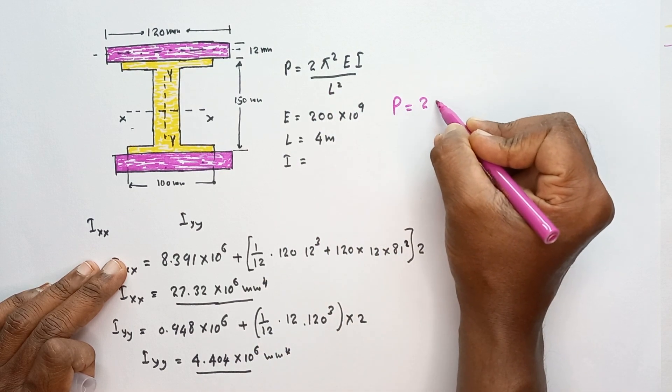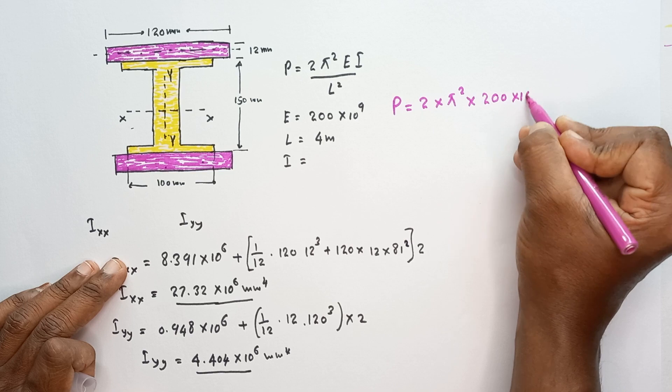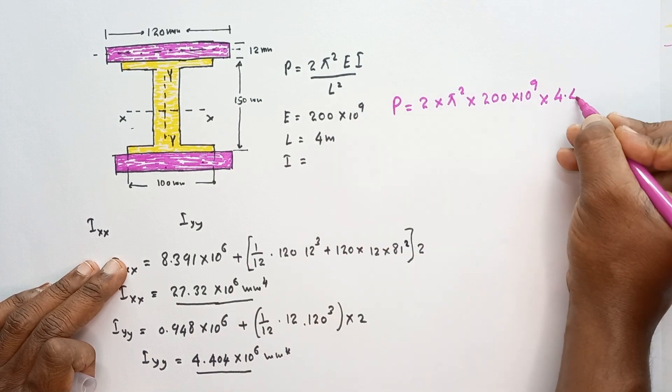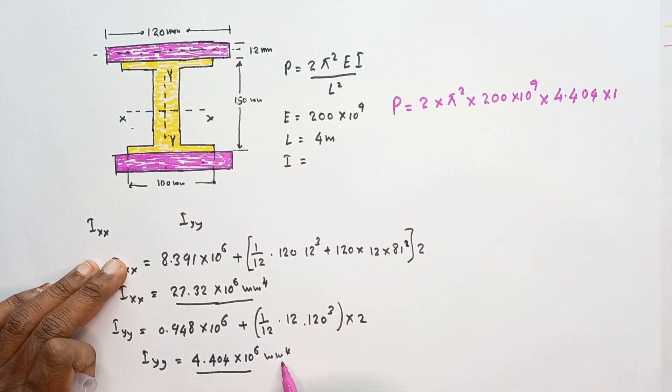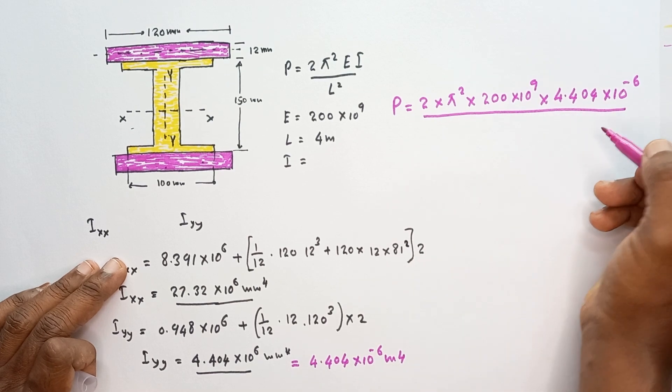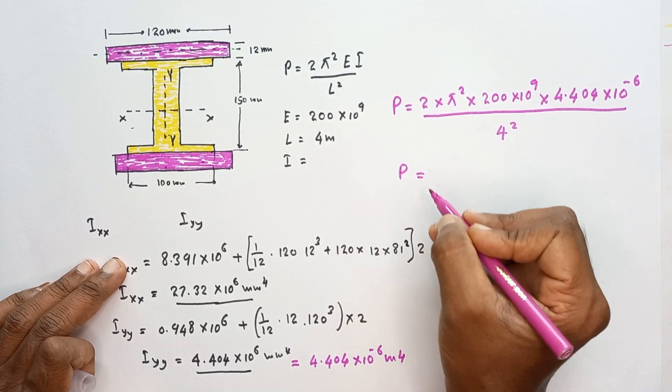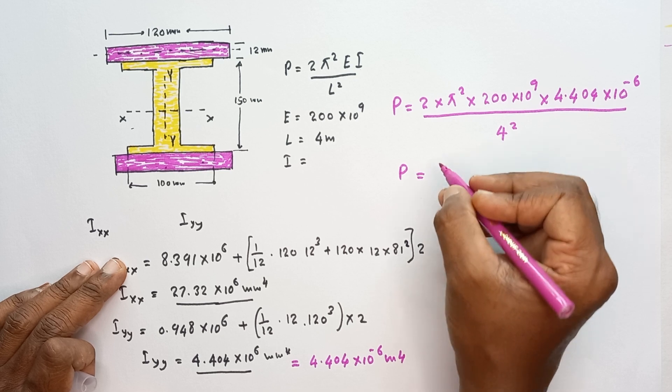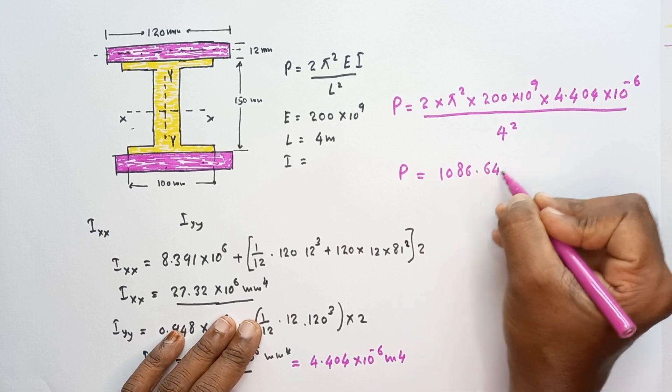The buckling load is equal to 2 × π² × E. Elastic modulus of the material is equal to 200 × 10⁹. Into I value, 4.404—we have to convert this millimeter to the fourth into meter to the fourth. So to convert to meter to the fourth, we have to multiply by 10⁻¹². So this one becomes 4.404 × 10⁻¹² meter to the fourth, divided by the length of the column given, 4 meters squared. Then we can calculate the buckling load, that is equal to 1086.64 kilonewtons.